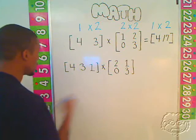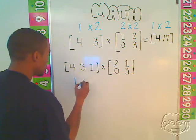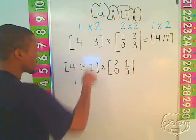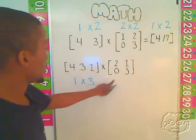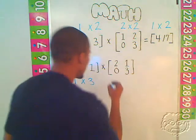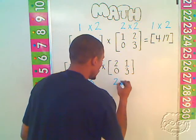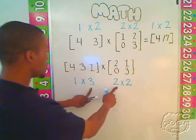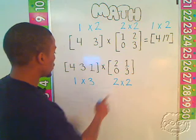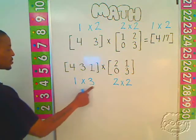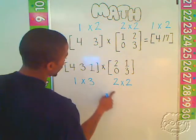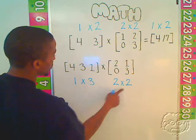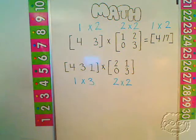Okay, this is a 1-3 matrix. One row, three columns. This is a, oh, wait a minute. This is a 2-2 matrix. These values here are not the same. My number of columns in my first matrix and the number of rows in my second matrix, I know that I shouldn't be able to multiply.